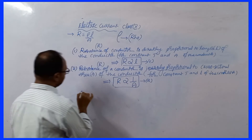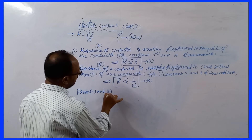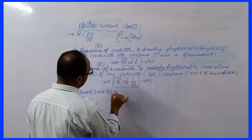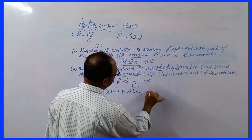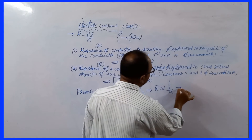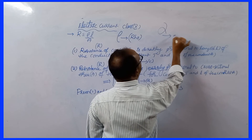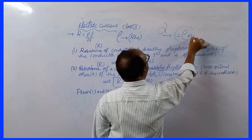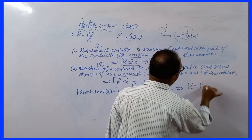From equation 1 and equation 2, combining them — R is common and proportionality symbol is common — we can write R is directly proportional to L into 1 by A. This implies R is directly proportional to L by A. Now, replacing the proportionality symbol with a constant rho and an equal sign, we get R equals rho L by A.